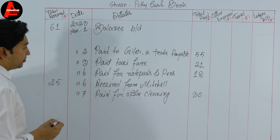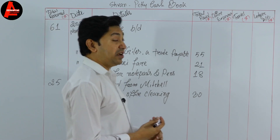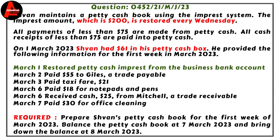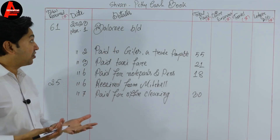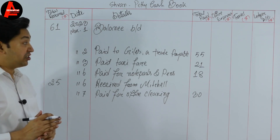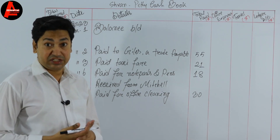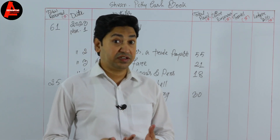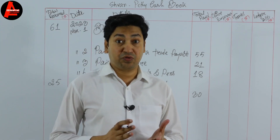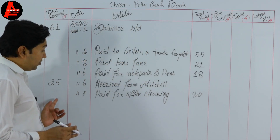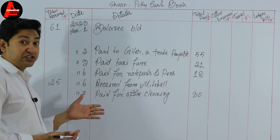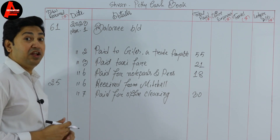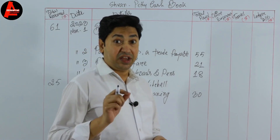Looking at the question again: on March 1st there is also 'restored petty cash imprest from the business bank account.' We already wrote the opening balance of $61 for March 1st, but we did not yet record this restoration. Many students ignore this transaction or skip it, but that is incorrect — you have to write something here for the restored amount.